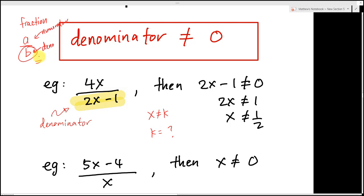The denominator can never equal zero. Therefore, when you see something like X cannot equals to K in your exam, what you need to do is find your denominator. In this case, my denominator is 2x minus 1. I will say 2x minus 1 cannot equals 0.